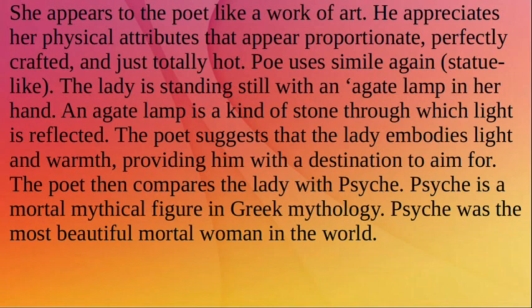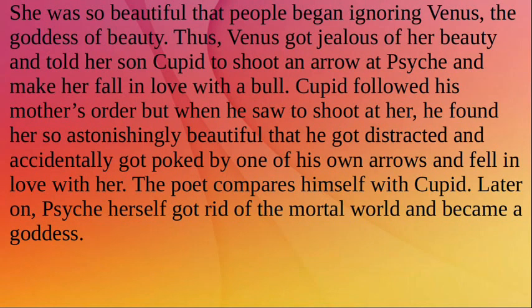The lady is standing still with an agate lamp in her hand. An agate lamp is a kind of stone through which light is reflected. The poet suggests that the lady embodies light and warmth, providing him with a destination to aim for. The poet then compares the lady with Psyche — a mortal mythical figure in Greek mythology who was the most beautiful mortal woman in the world. She was so beautiful that people began ignoring Venus, the goddess of beauty.